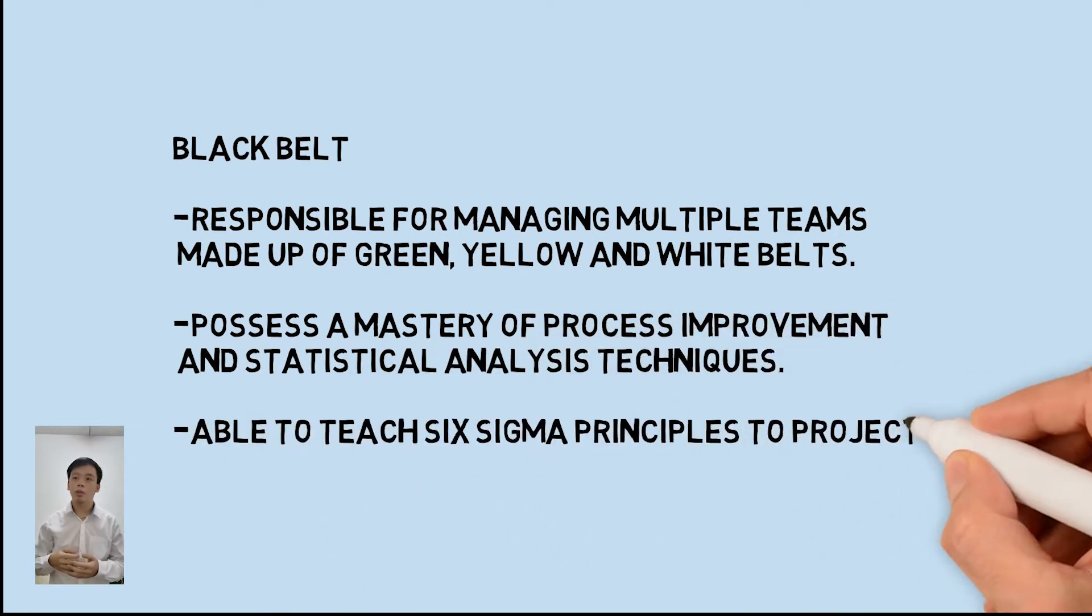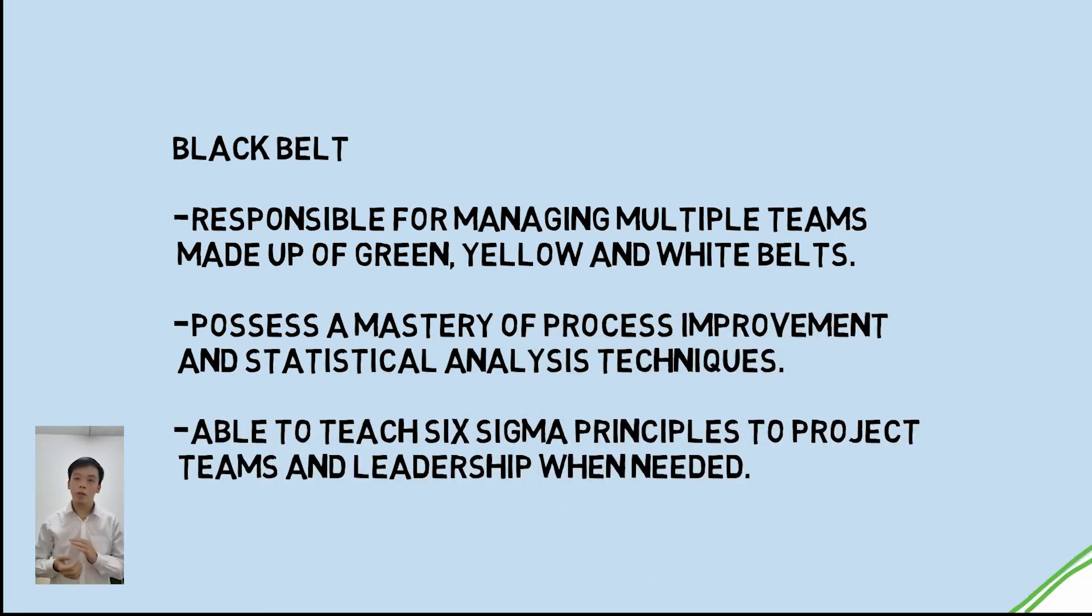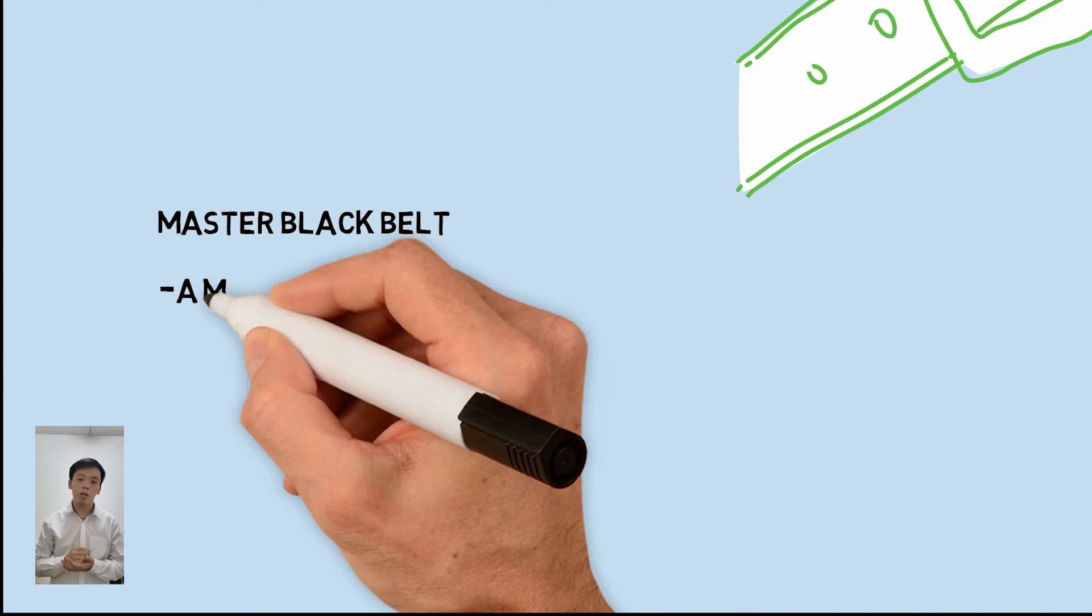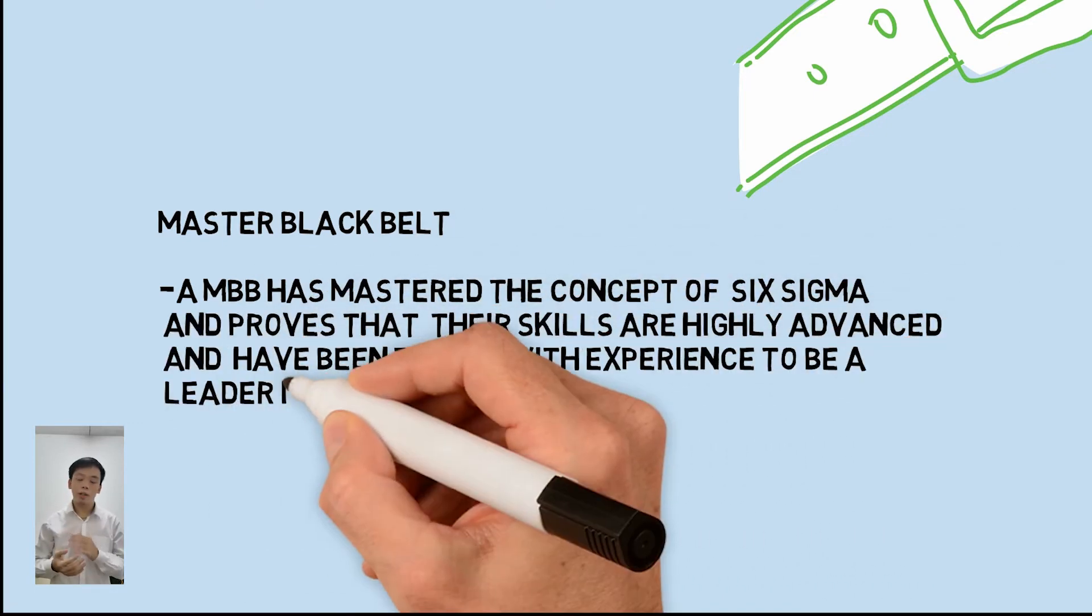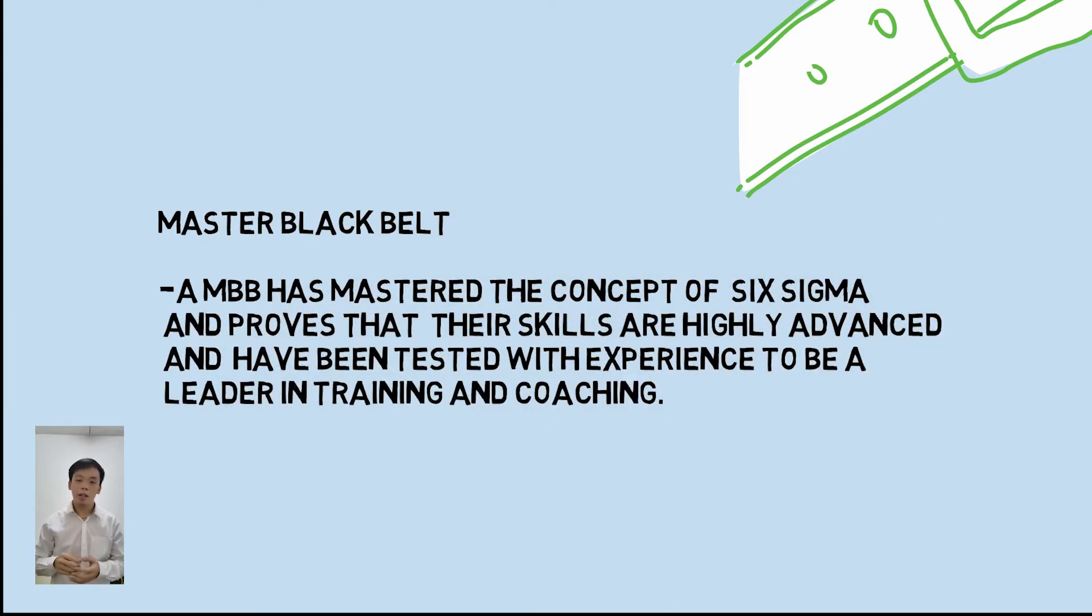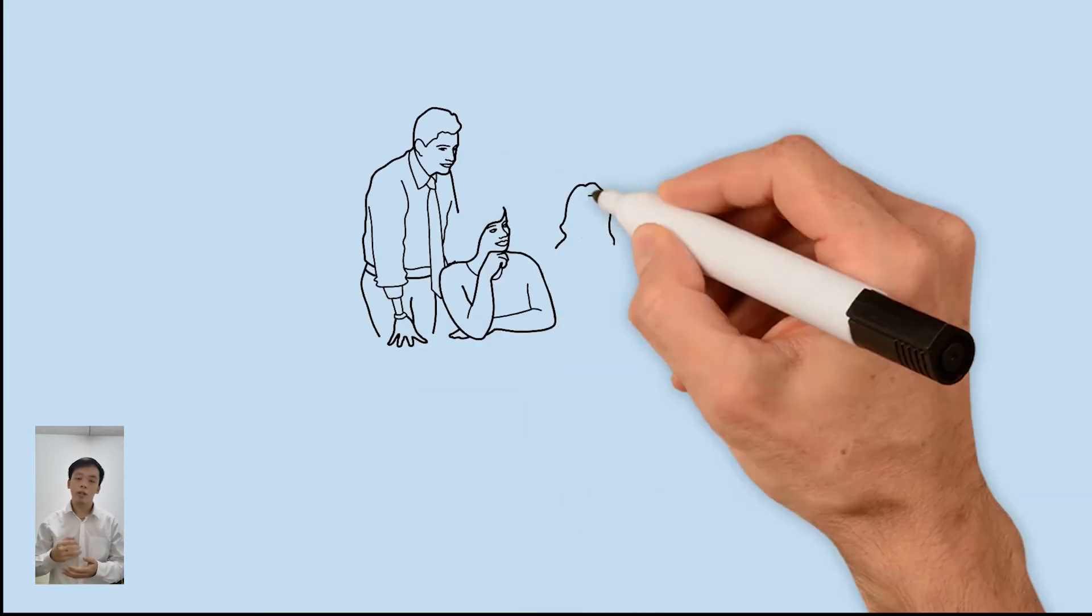Black belt is responsible for managing multiple teams made of yellow, green, and white belts. Master black belt has mastered the Six Sigma concept and has experience managing teams.